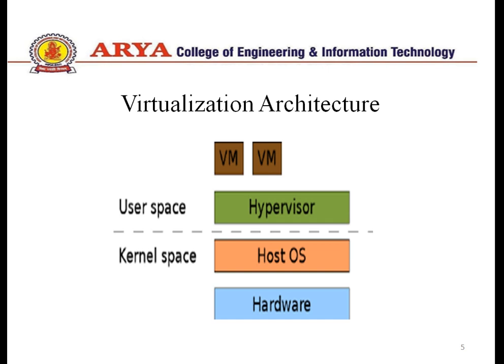Virtualization का architecture देखते हैं — किस तरीके से अपने simple PC को एक virtual PC में convert कर सकते हैं। सबसे पहले hardware है: CPU, printer, monitor, keyboard, mouse — यह एक complete system है। उसके ऊपर host OS install होती है — suppose Windows 7 या Windows 8, जो भी आप चाहें। उसके ऊपर एक नया term है: hypervisor — यह एक software है जिसको host OS के ऊपर execute करवाते हैं। Hypervisor को दो तरीके से use कर सकते हैं: या तो directly hardware के ऊपर implement करो, या host OS के ऊपर install करो। Hypervisor का काम virtual machine create करना है।